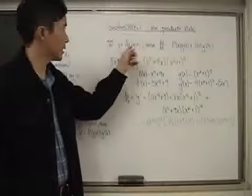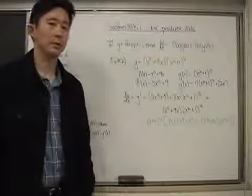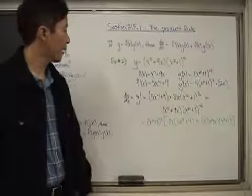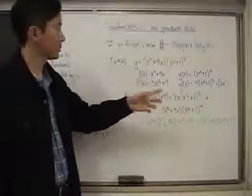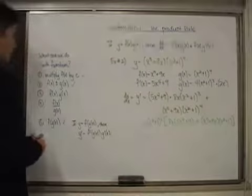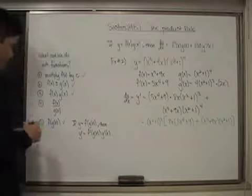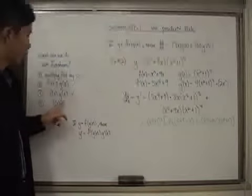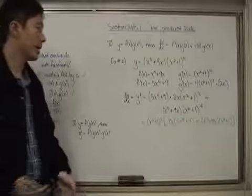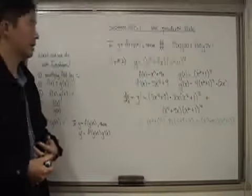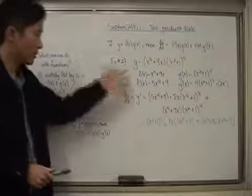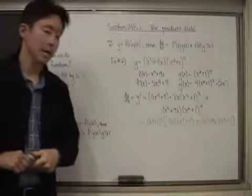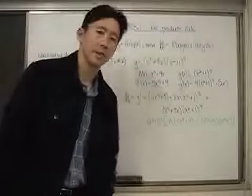So in this example we used not only the product rule but also the chain rule, since one of the functions was a composite. That's the product rule — now one of the tools on our list. We'll have just one more rule before you can say you can differentiate any function given to you. Give it your best shot and see you next time.